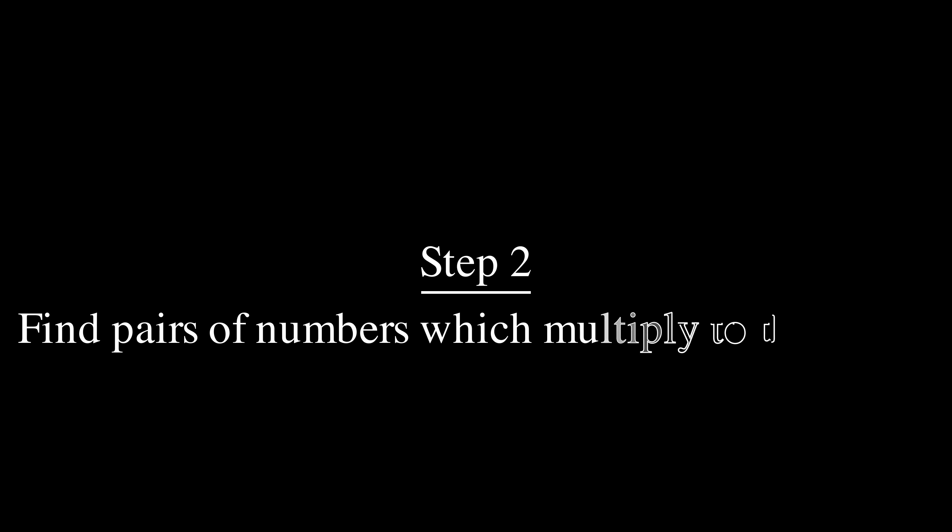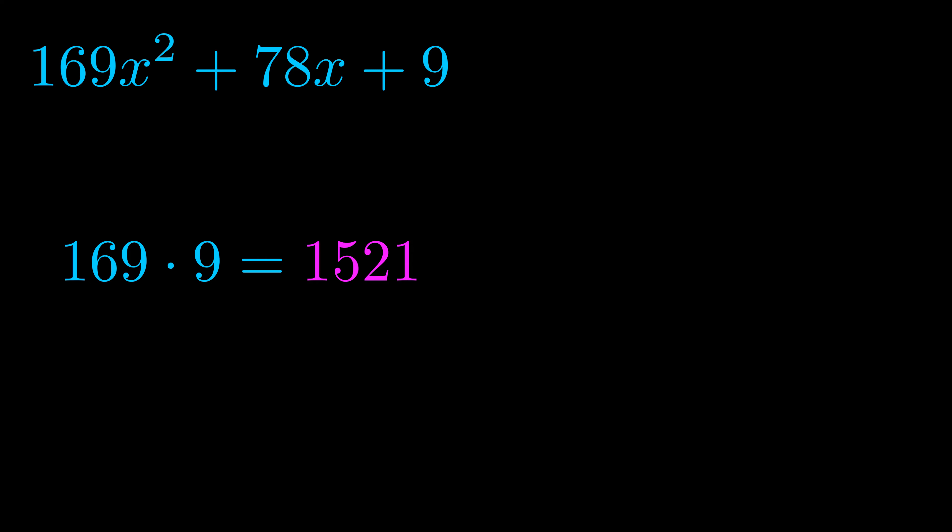Step two is to try to find all of the pairs which multiply to this number. Now it turns out you don't really need to find all of them, but go ahead and write down as many numbers as you can that multiply to the magenta value for now. Pause the video and resume when you're ready to continue.